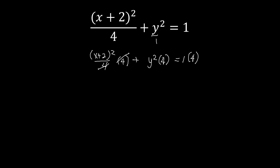Simplifying: we cancel the denominator and what we multiplied, so we are left with 1 times x plus 2 squared, which is just x plus 2 squared. Then y squared times 4, giving us 4y squared, and that equals 1 times 4, which is 4. Now we are going to expand the binomials that are raised to the power of 2 — we'll use the FOIL method, copying x plus 2 and multiplying it by itself.